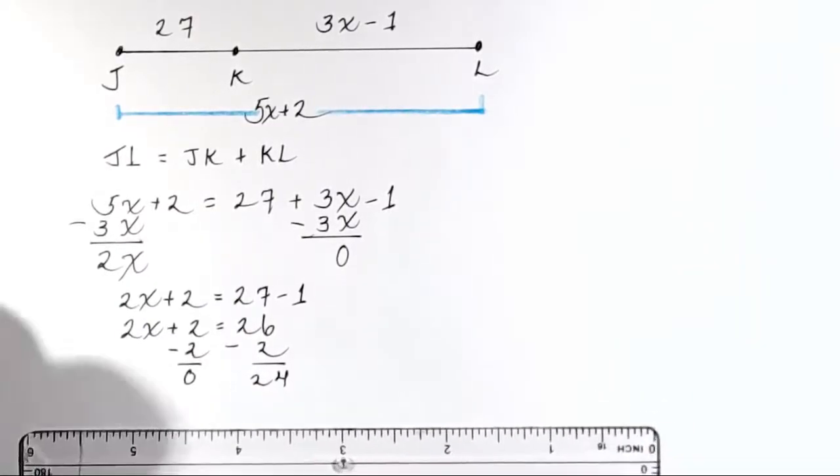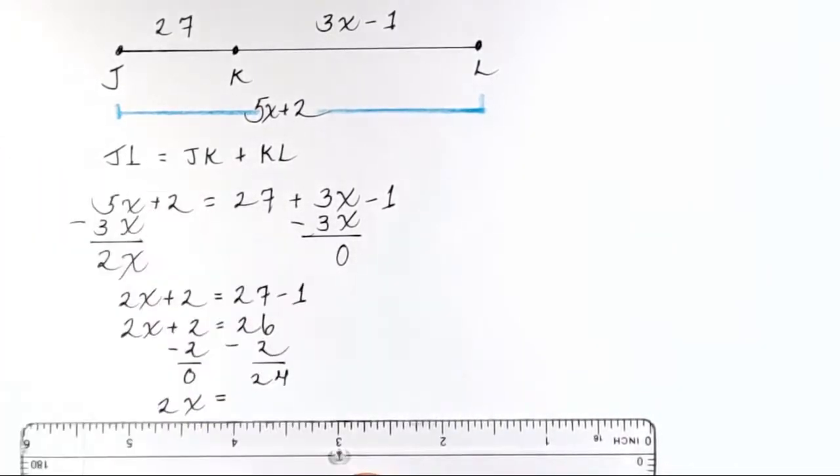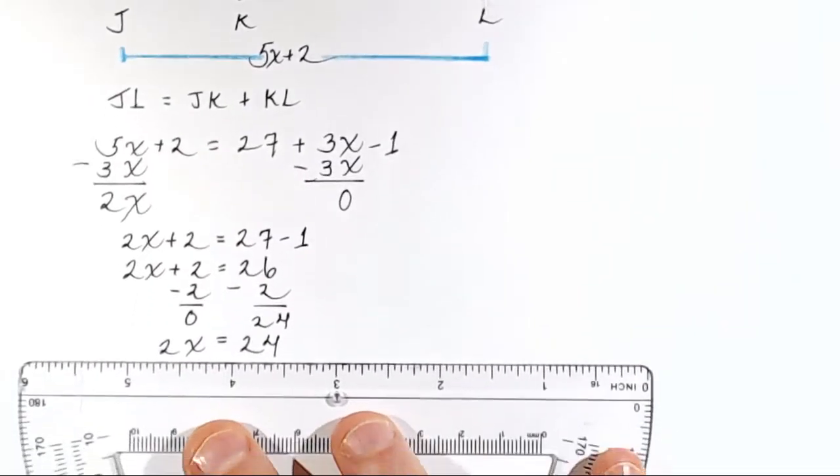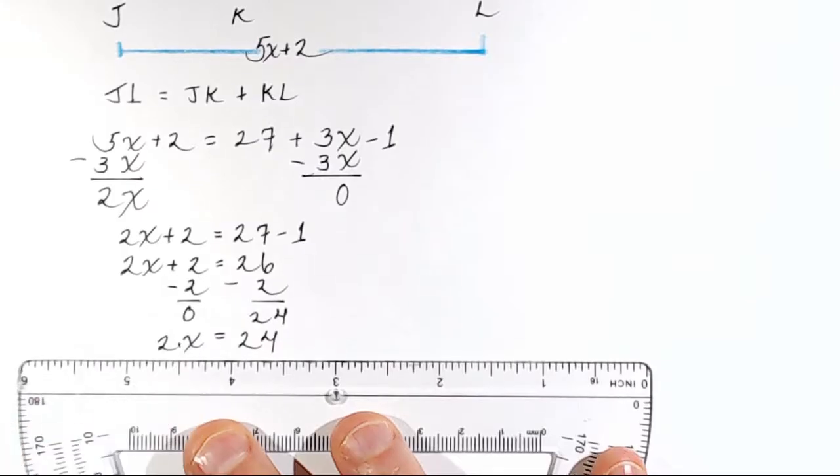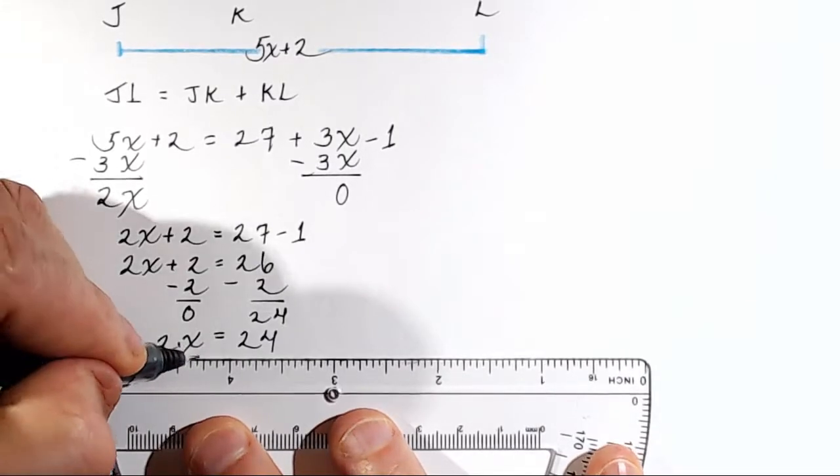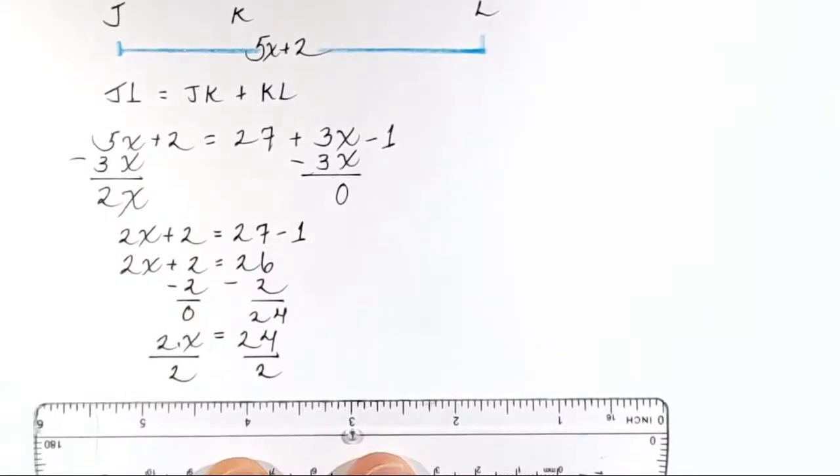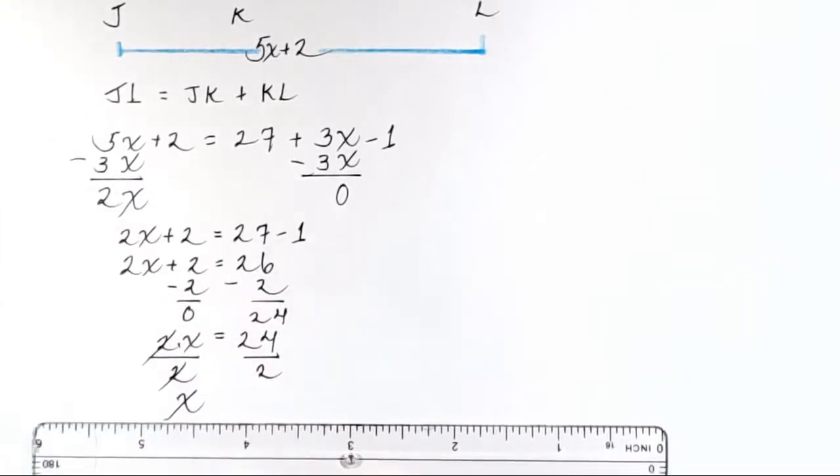So now what do I have? I've got 2X on the left equal to 24. So 2X equals 24. I bet you're doing it in your head right now. So I want to get rid of the 2. 2 is currently being multiplied by X, so I'll divide both sides by 2. Okay? The 2s cancel on the left. 2 divided by 2 is 1. And I've got X equals 24 divided by 2, which is 12.